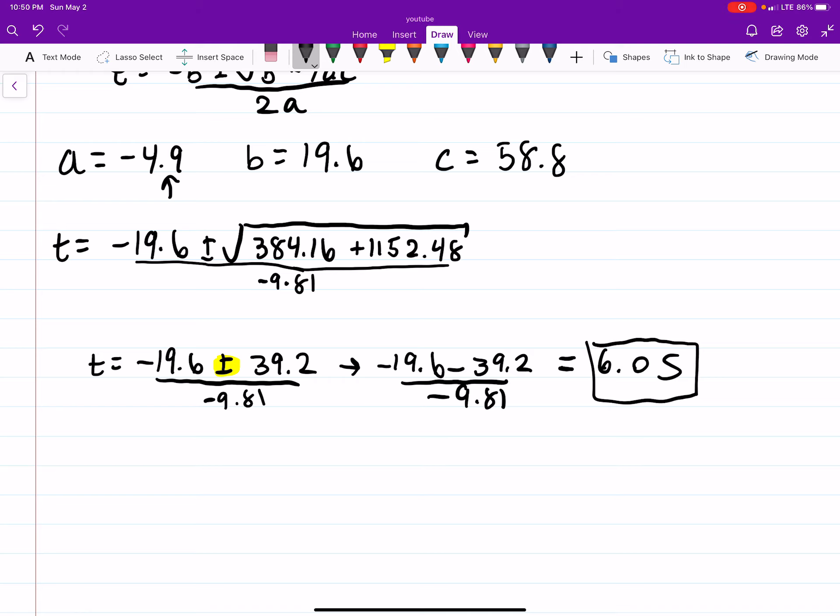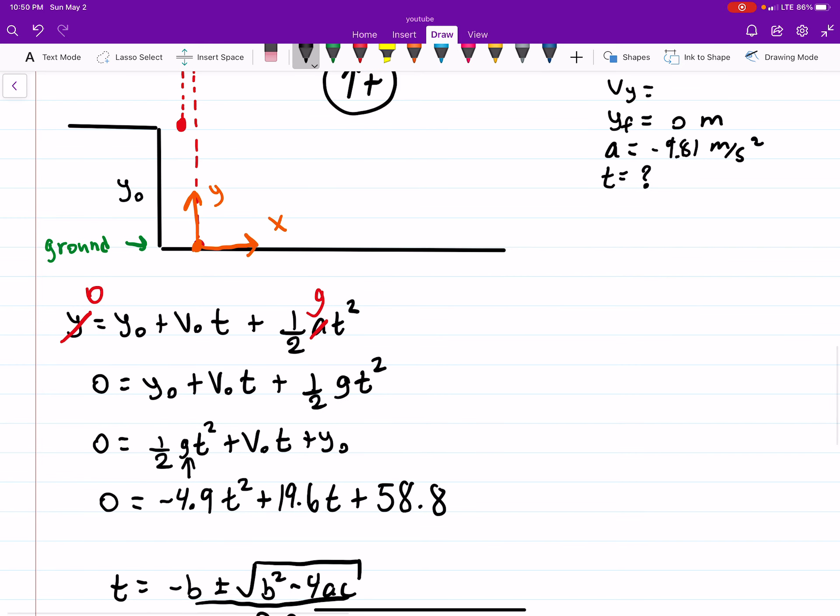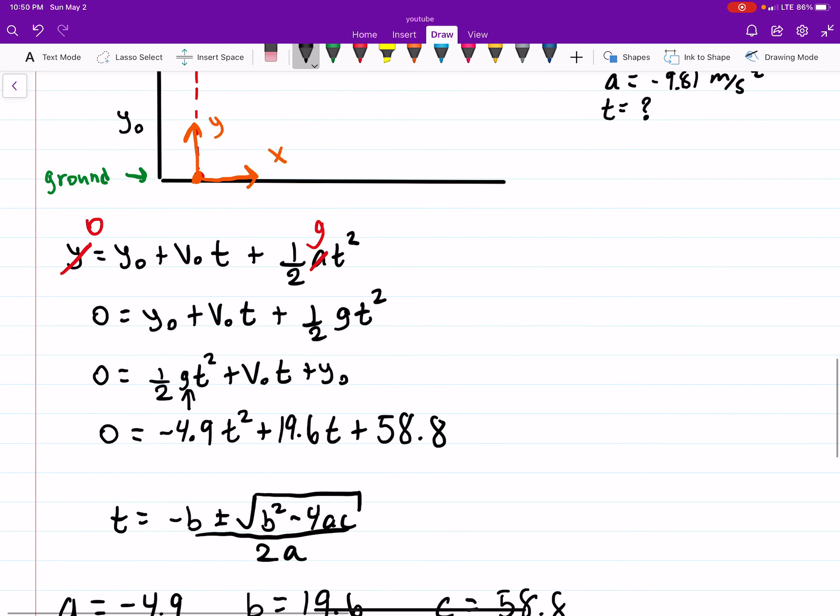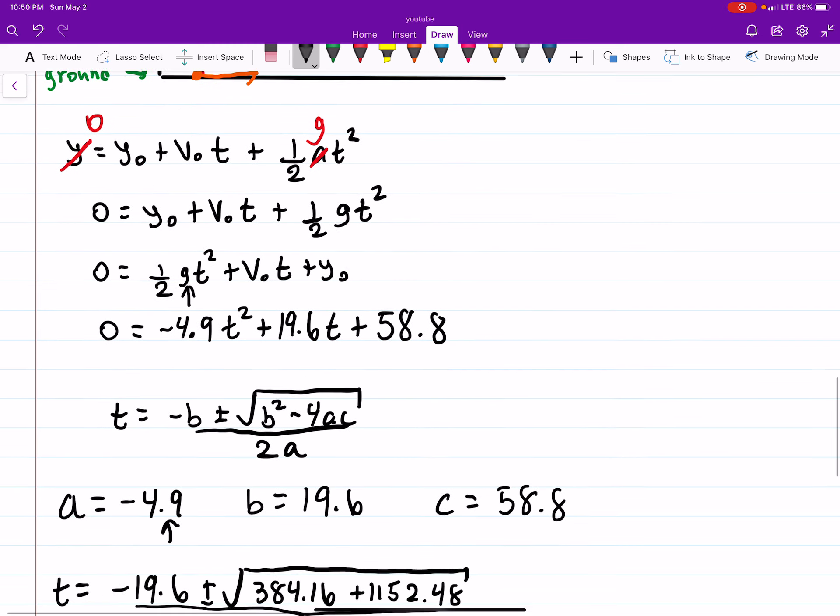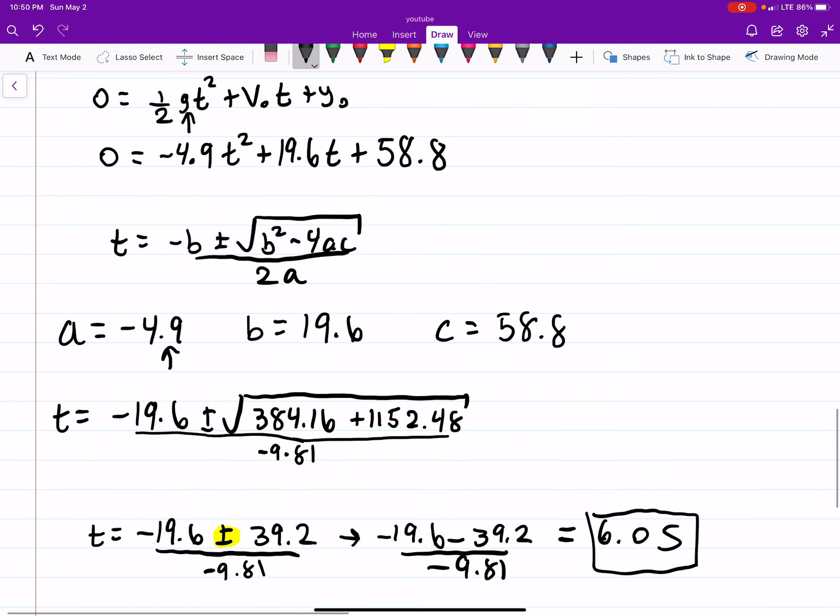So that's how long it takes for the ball to hit the ground. We just write down what we knew, we drew a picture, we wrote down what we knew, we use our kinematics equation, played with it a little bit, plugged in variables, solved the quadratic equation, plugged it in, and got our answer.